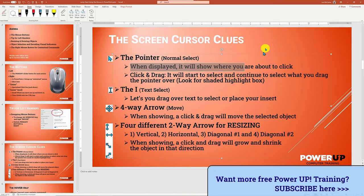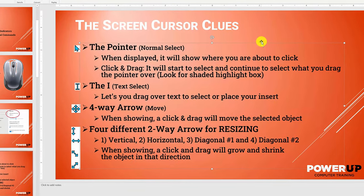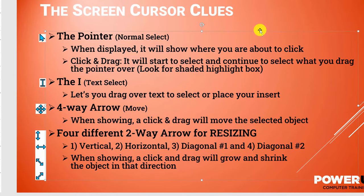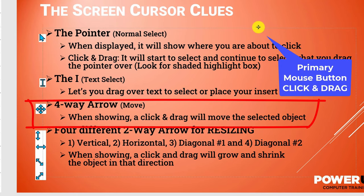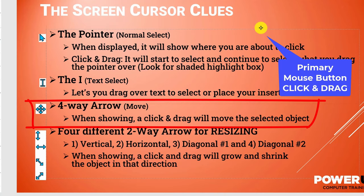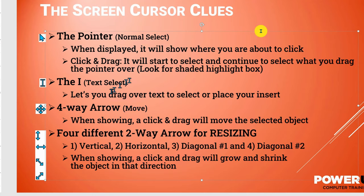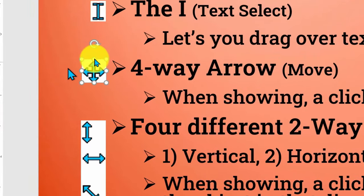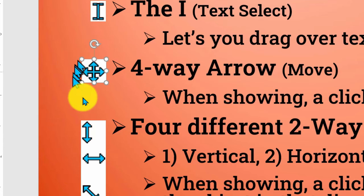Next is the four-way arrow, which is an indicator that if you click and drag — clicking and holding down the primary mouse button — it will move the object selected. See how I'm moving the text box around while the four-way arrow indicator is displayed. Now selecting a different object: I'll select an image, and you can see if I move my mouse pointer over it, I get the four-way arrow and can click and drag it. Moving the mouse pointer away returns it to just the pointer selector.